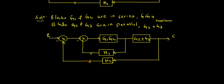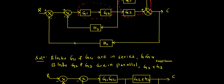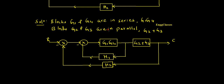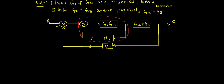Here I can find one minor feedback loop — it is the term with G1G4 and H1. I can reduce that inner loop and have only one block. So let me do that now. Apart from that, the rest of the things would remain as they are, so I am not going to touch anything else.